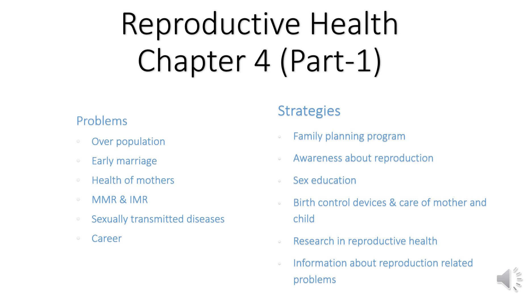The question arises: why is it significant to maintain reproductive health, and what are the methods to achieve it? In this slide we'll study some problems and strategies. First, the problems: overpopulation is a main problem in India due to excess population. Next is early marriage — children are often married as soon as they attain puberty. This leads to health problems for mothers and children, as the mother is not able to properly care for her child.